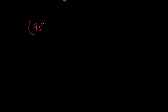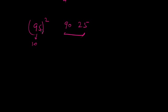Let me give one more example. 95 squared: 5 squared is 25, and the next number to 9 is 10, and 9 times 10 is 90. So 95 squared is 9025. And one more thing: any number whose square ends in 25 will have a square root ending in 5.